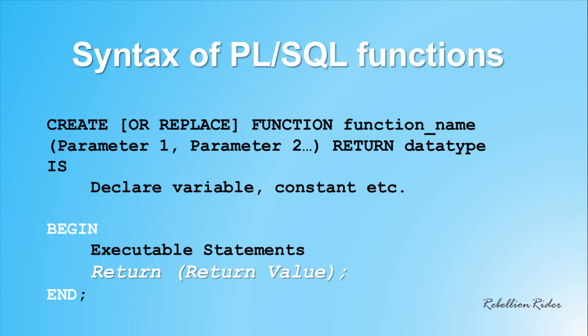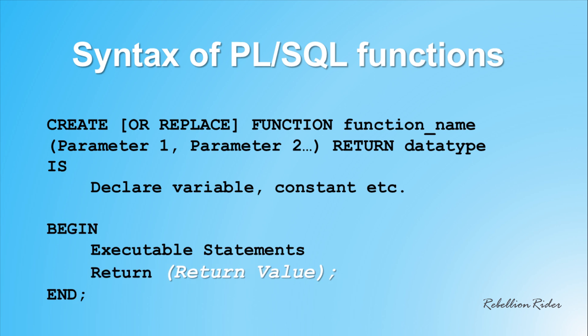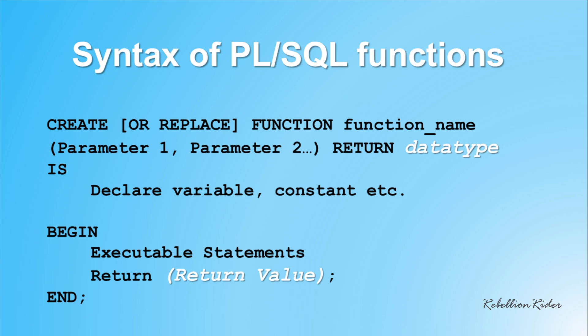In between BEGIN and END you can write the executable statements and define the working of the function. Do not forget to define the return statement in the execution section — this will specify the actual values which will be returned by your function. The data type of this actual value must match with the data type that you specified in the header of the function. That's all you have to take care of, and that's it about the syntax of PL/SQL functions in Oracle Database.